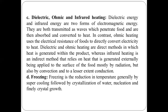Next is dielectric, ohmic, and infrared heating. Dielectric energy and infrared energy are two forms of electromagnetic energies transmitted as waves which penetrate food and are absorbed and converted into heat. Dielectric and infrared penetrate the food material and absorb excess moisture and convert it to heat. In contrast, ohmic heating uses the electrical resistance of foods to directly convert electricity to heat. Dielectric and ohmic heating are direct methods where heat is generated within the product, whereas infrared heating is an indirect method relying on heat generated externally.